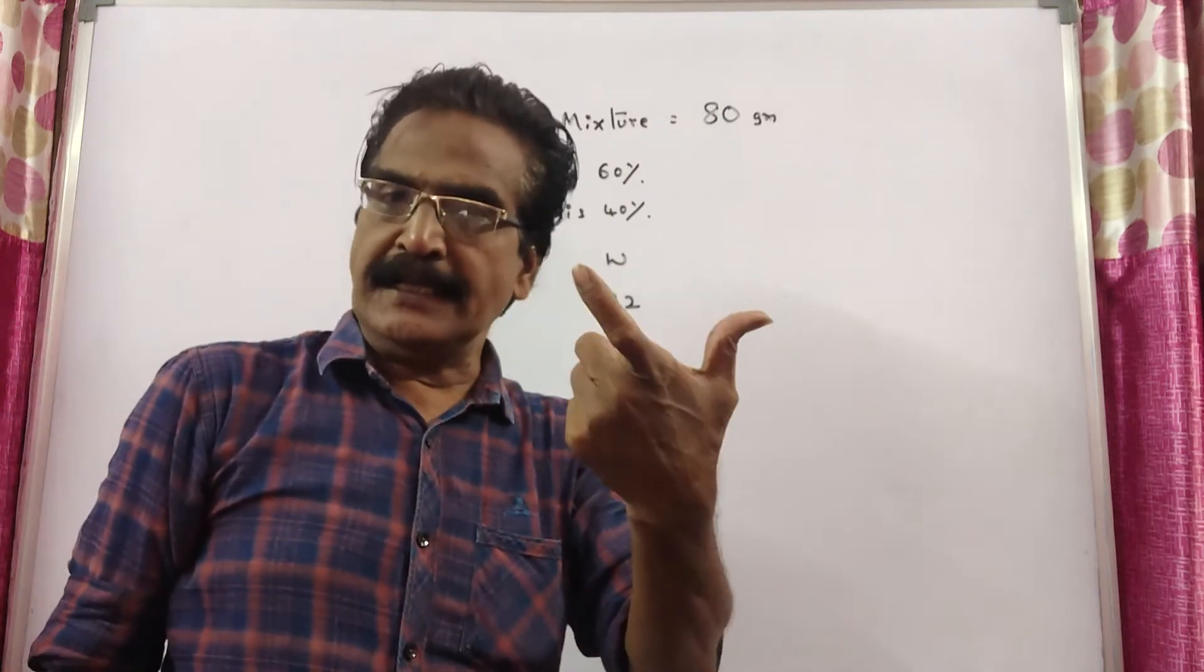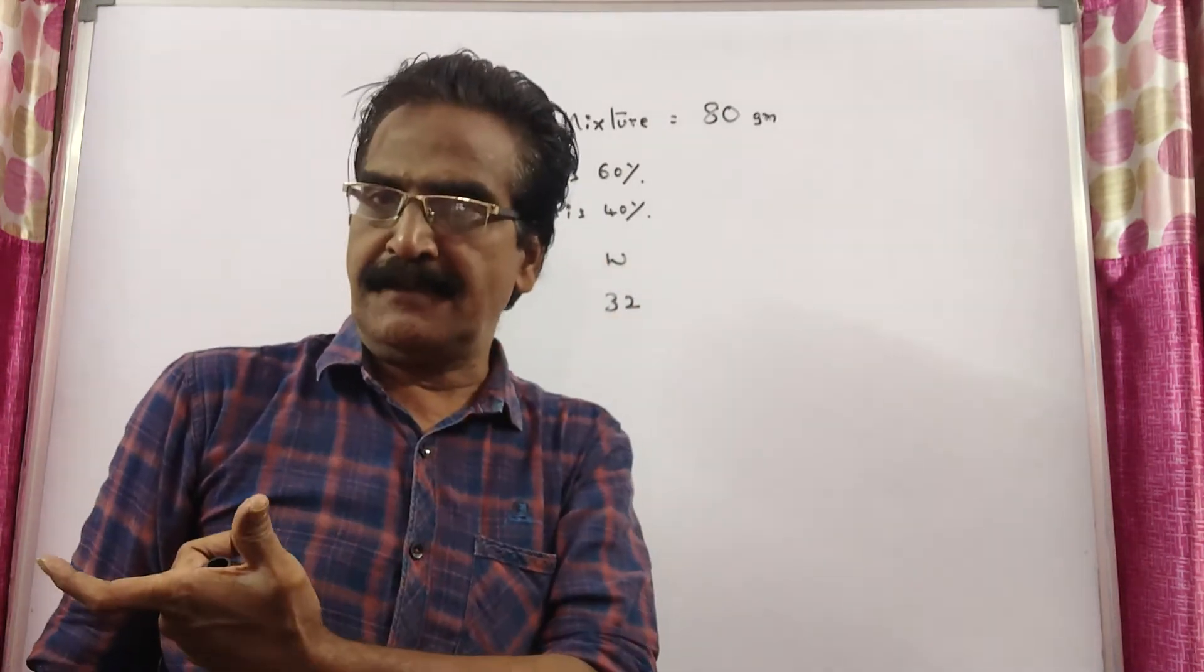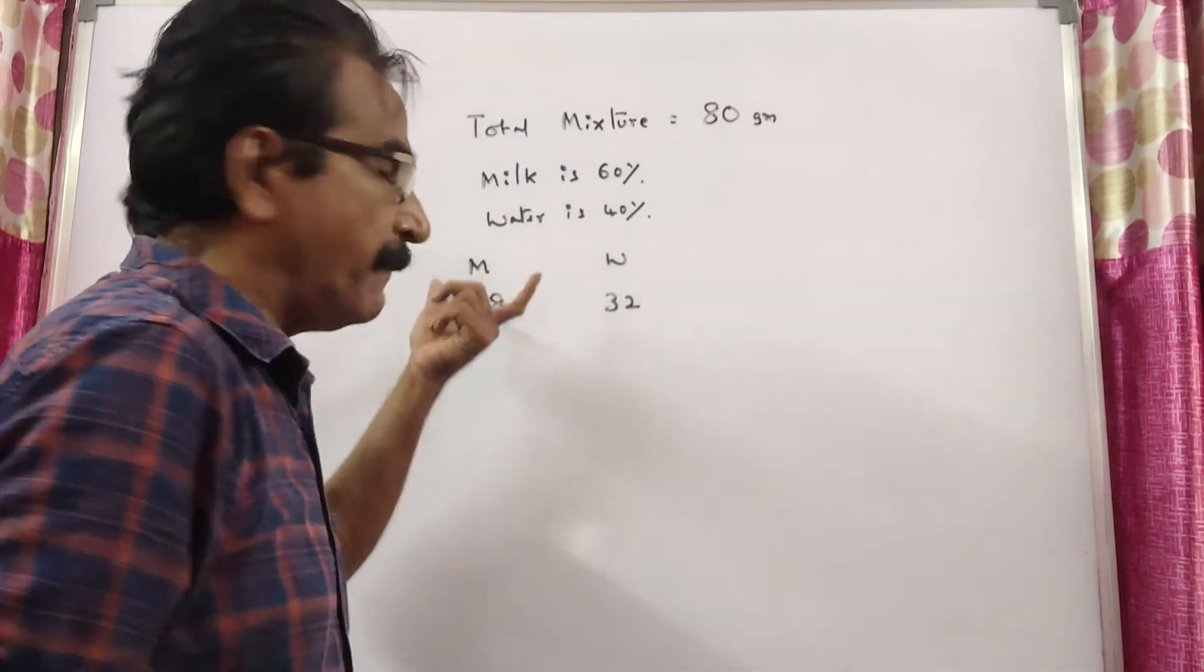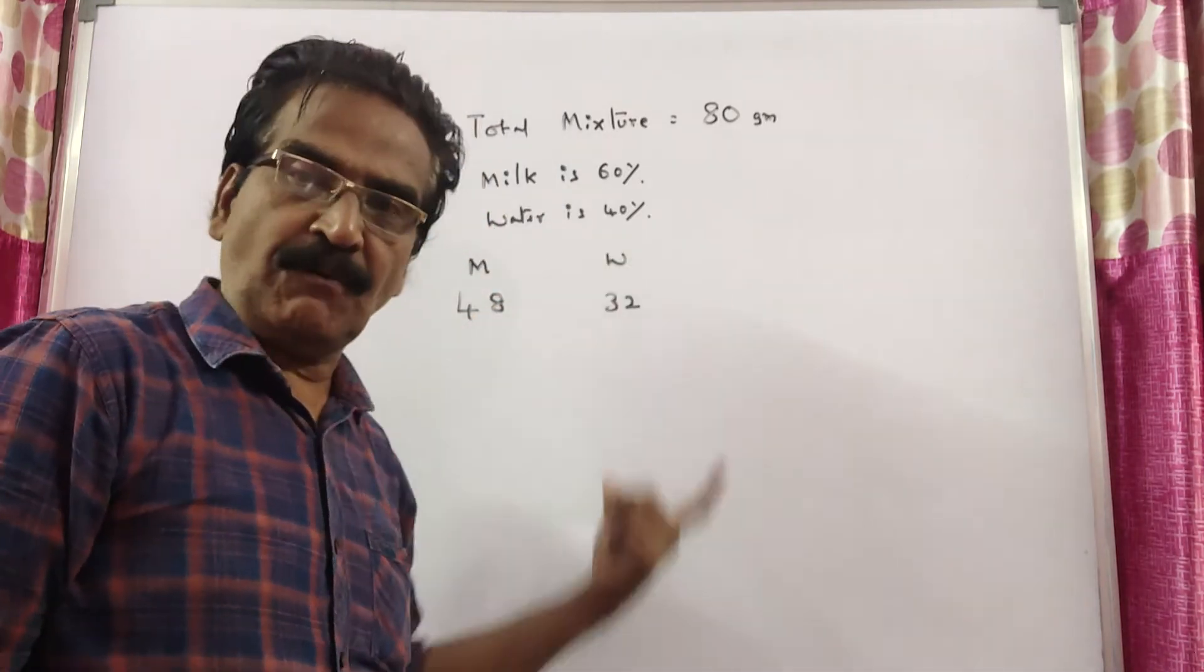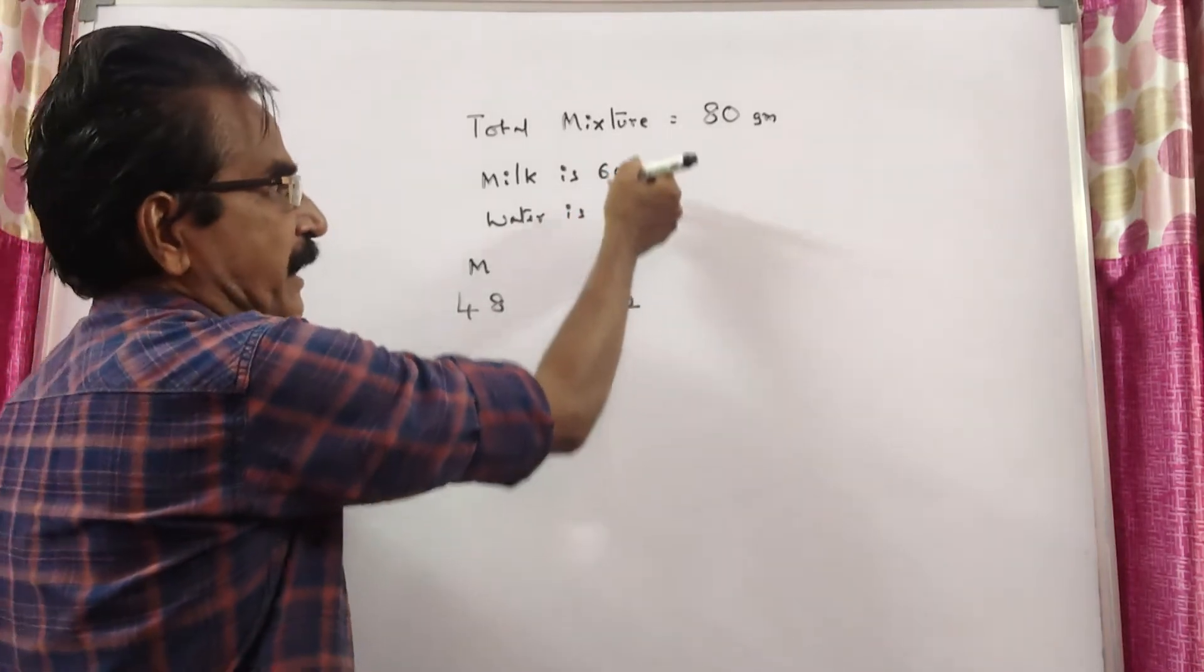Now, what happened? 20 grams of mixture is taken out. If 20 grams of mixture is taken out, how much milk will come out and how much water will come out? They come out in the ratio 60 to 40.